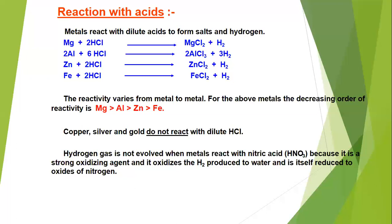One more thing — metals like sodium, potassium, magnesium, aluminium, zinc, and iron all react to liberate hydrogen from acids or from water. Why? Because these metals give out their electrons more rapidly than hydrogen does. That is why they form their own salts and hydrogen is unable to retain its electrons, so it is released as hydrogen gas.